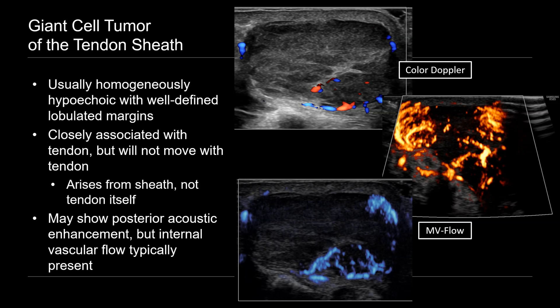They may also show posterior acoustic enhancement — as in this case we see these bright echoes posterior to the mass, this increased through transmission. That's something that may make you initially think, could this be a complex cyst? But the presence of internal vascular flow will allow you to confidently diagnose this as a solid mass.